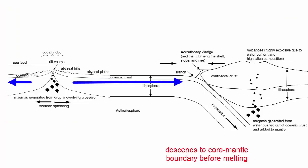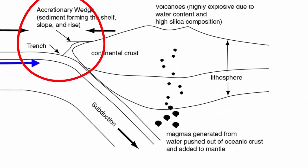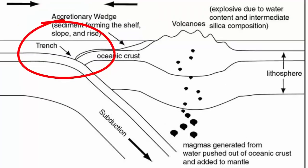Where the old ocean lithosphere sinks, we get a deep trench on the seafloor above. When next to a continent, this trench can fill with lots of sediment. When next to ocean islands, it tends to be deeper — like the Marianas Trench.